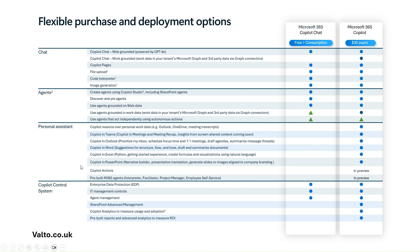We also have Copilot actions — if you want it to run a custom workflow or use pre-built workflows inside the Microsoft 365 agents, like the interpreter, the facilitator, the project manager, and the employee self-service agent, you're going to need a premium license for all of those things.